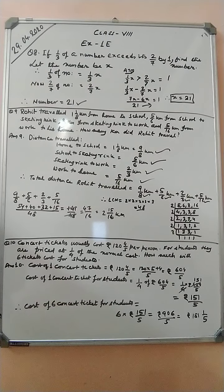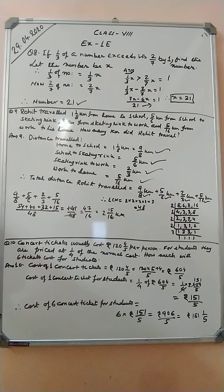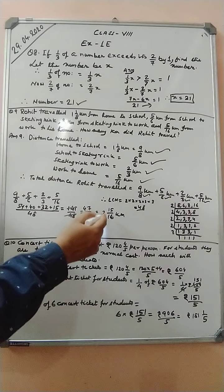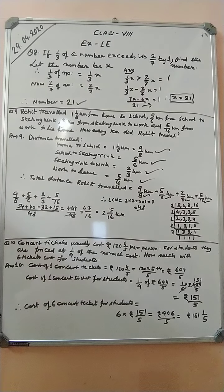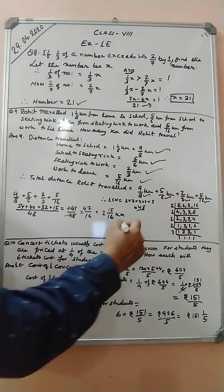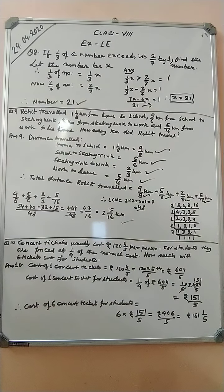Students, in this video we will be going through question number 8, 9 and 10 of exercise 1e. Question number 8: If 1 by 3 of a number exceeds its 2 by 7 by 1, find the number.